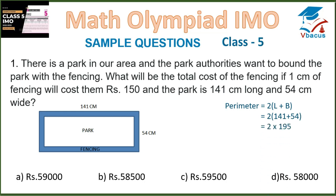You can multiply 2 by 195, which is the total of 141 plus 54. The answer will become 390. Now, cost of 1 cm is Rs. 150 and perimeter is 390; if you multiply them, you will get the answer 58,500, which is in option B. So, option B is correct.